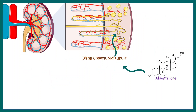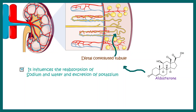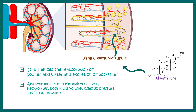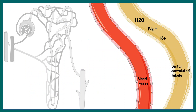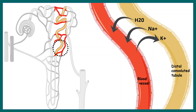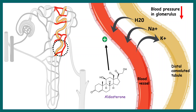Aldosterone, a mineralocorticoid, acts on the distal convoluted tubule of the nephron. It influences the reabsorption of sodium and water and helps in the excretion of potassium, thereby regulating mineral balance. Aldosterone helps in maintenance of electrolytes, body fluid volume, osmotic pressure, and blood pressure. It promotes reabsorption of water and sodium from the tubule into the blood vessel, while secreting potassium, thereby maintaining mineral concentration in the body.